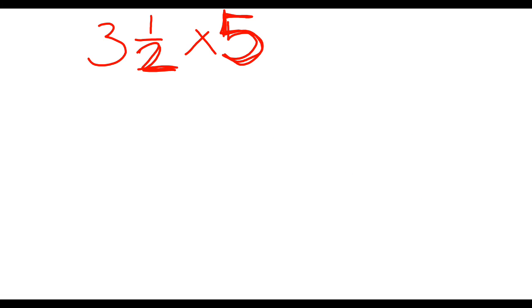So here we have a mixed number times a whole number. I also wanted to review what we do when we've got whole numbers. So to turn any whole number into a fraction, you simply put it over 1. So this is going to become 5 over 1. And then to turn 3 and a half into an improper fraction, 3 times 2 is 6 plus 1 is 7. So this is 7 halves.